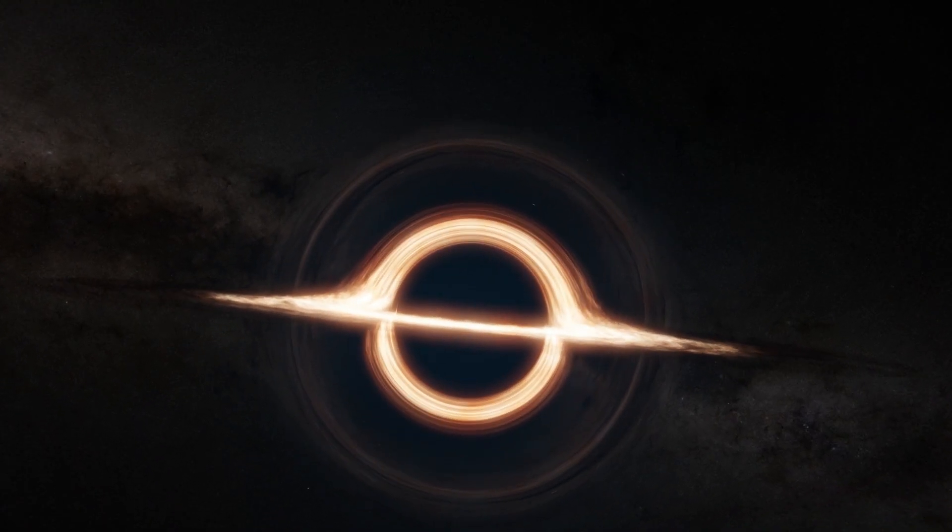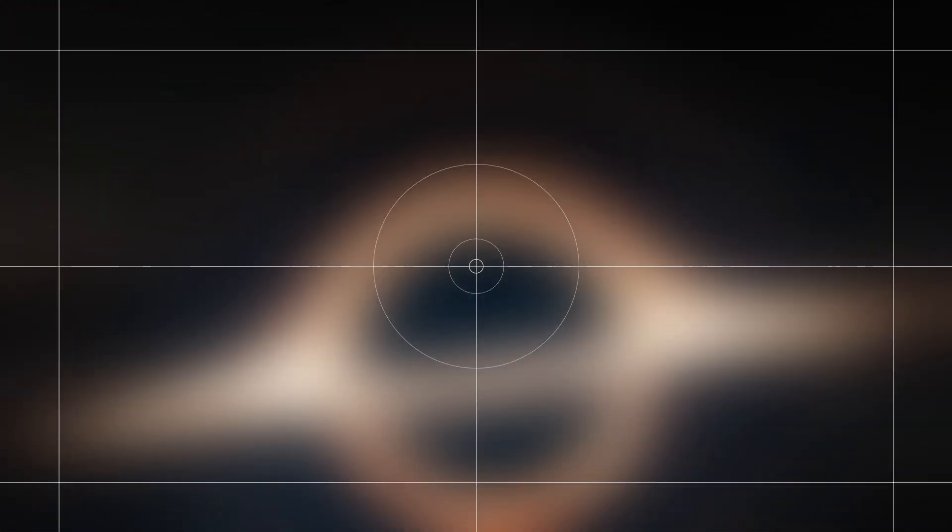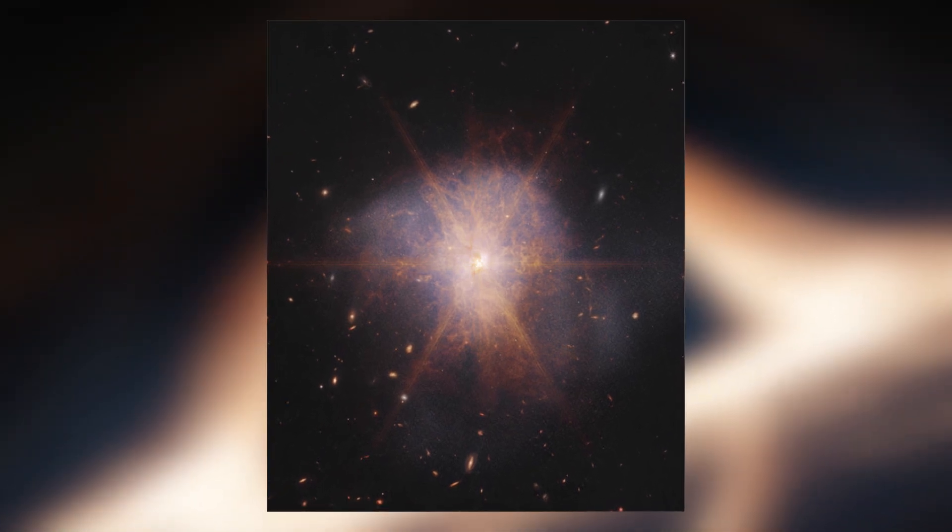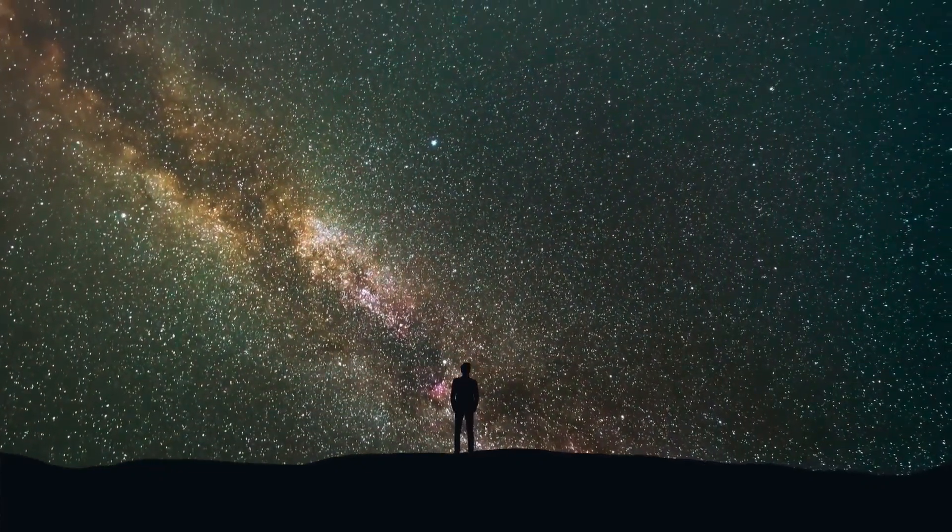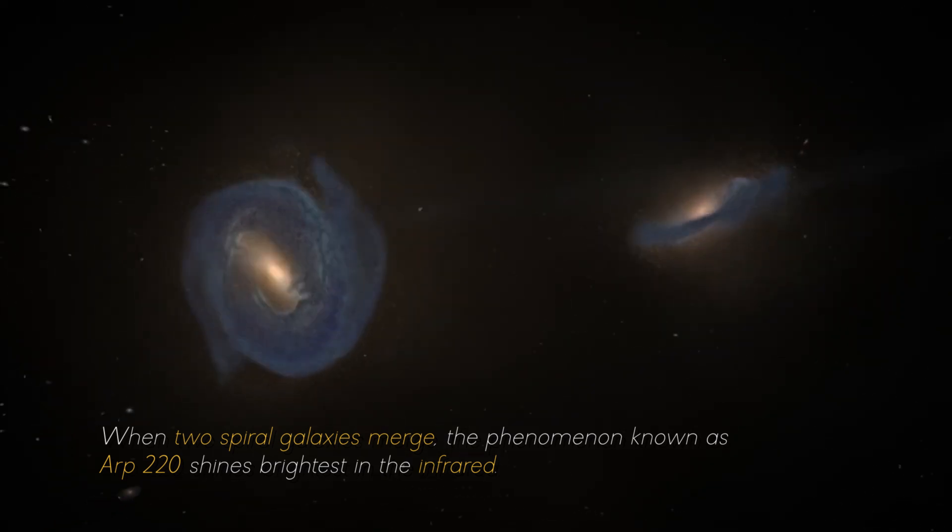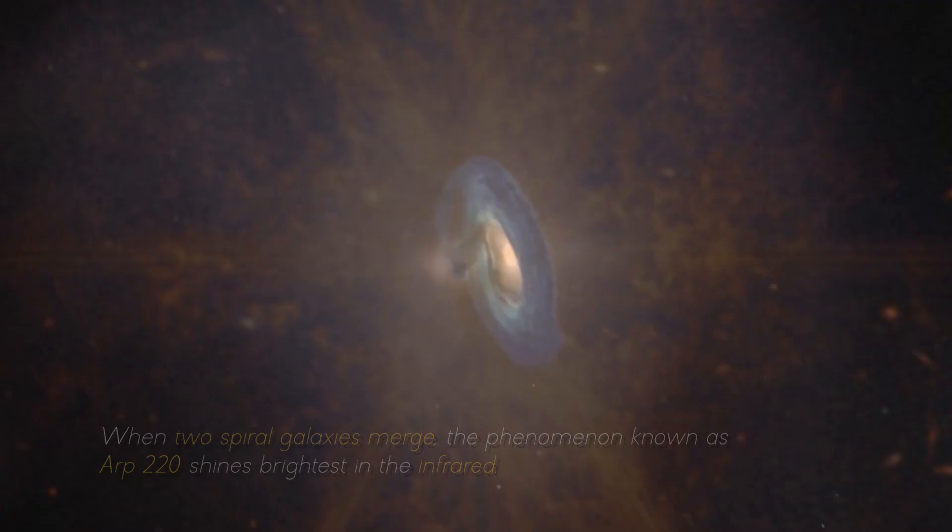But that's not all. NASA has made an exciting announcement about the galactic merger of ARP 220, which was captured by the James Webb Space Telescope. This impressive galactic merger can be seen shining among other galaxies in the night sky. When two spiral galaxies emerge, the phenomenon known as ARP 220 shines the brightest in the infrared.